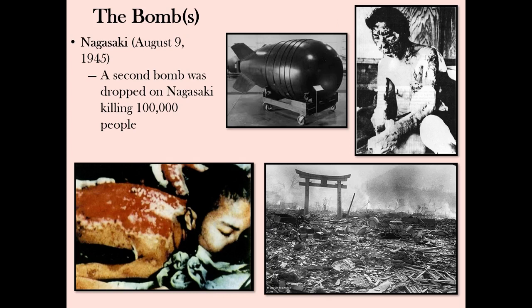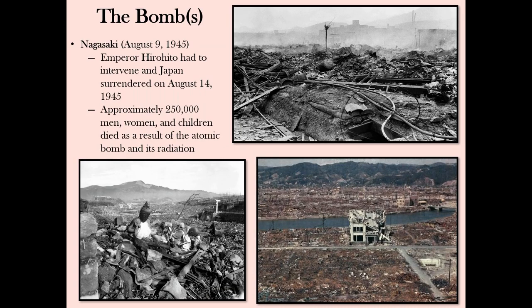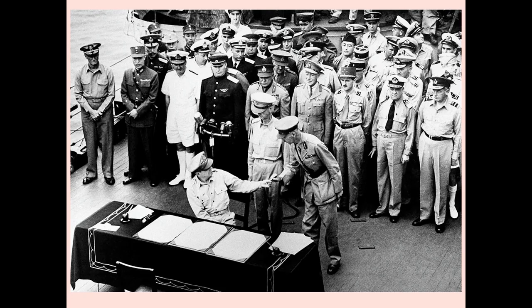When the Japanese refused to surrender, a second bomb was dropped on August 9 on Nagasaki. These cities were chosen not for their military value but because they were relatively untouched by the war, allowing the US to better assess their new weapon's damage. This second atomic bomb killed 100,000 civilians. Even after this, the Japanese War Council was divided; it took the intervention of the Emperor to end the war. On September 2, 1945, Japanese officials signed the Articles of Surrender aboard the Missouri. World War II was officially over.